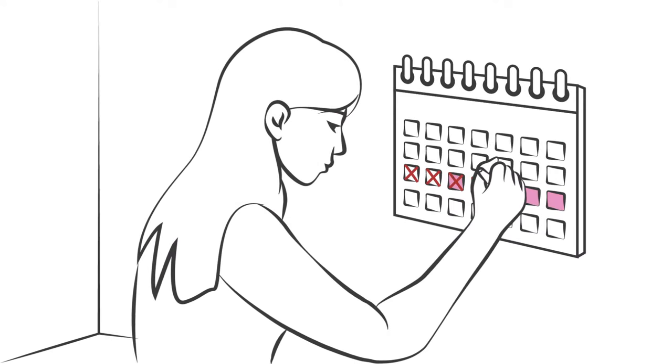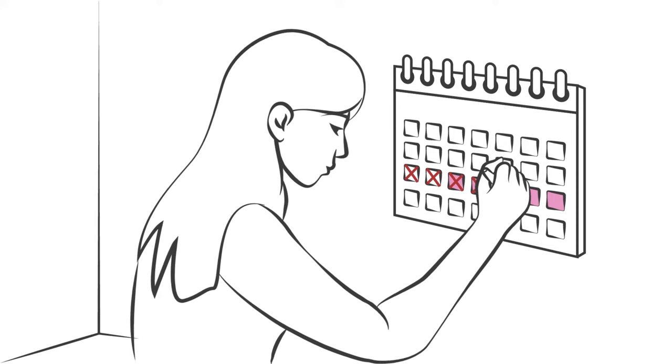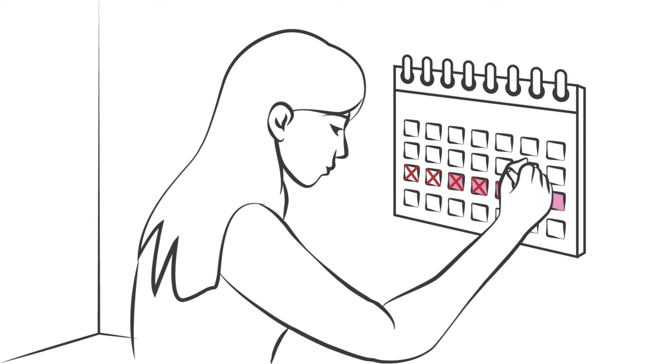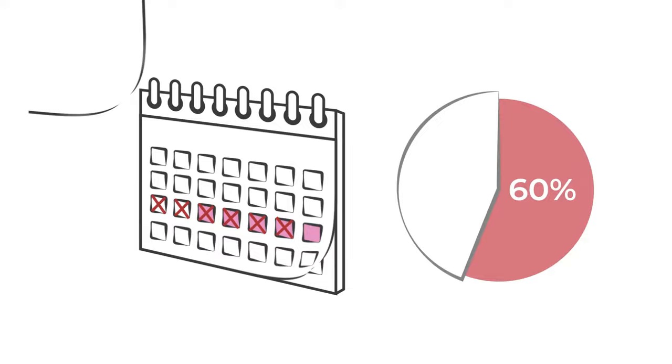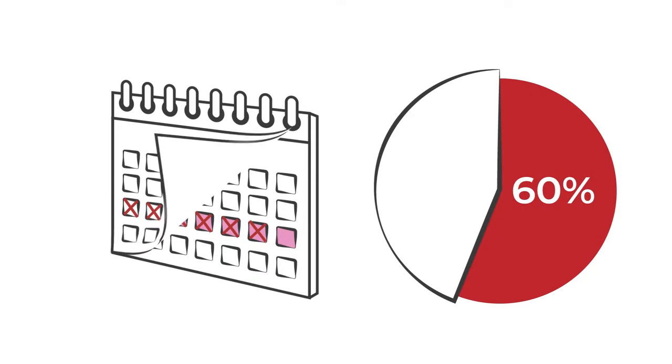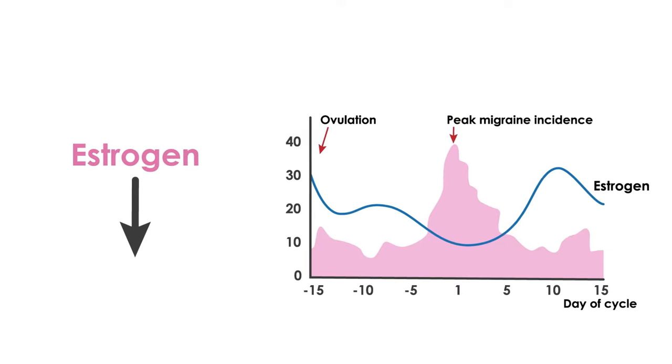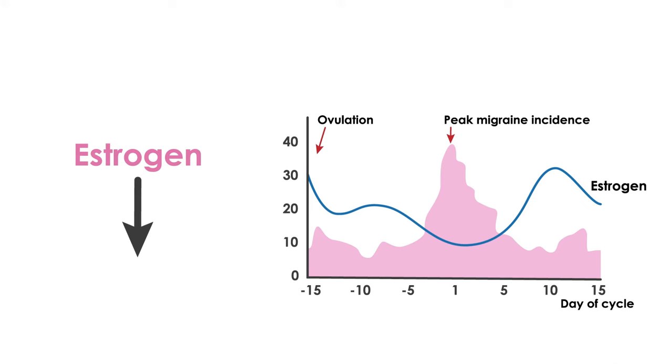Menstrual migraine refers to migraine attacks that start right before or during a woman's period or menstruation and occur in more than 60% of their cycles.